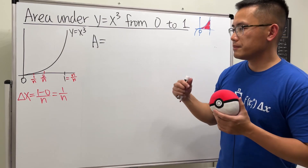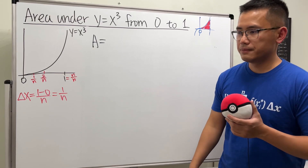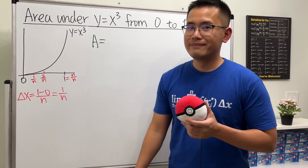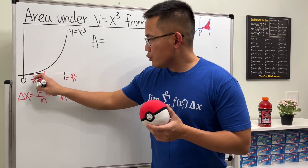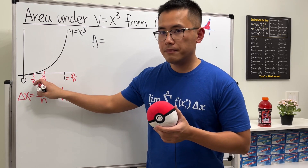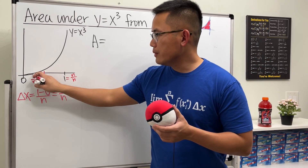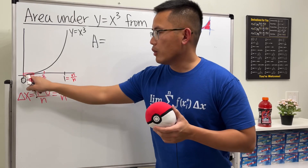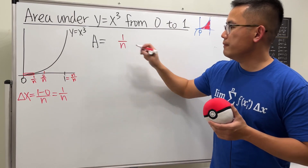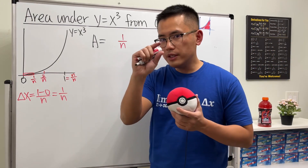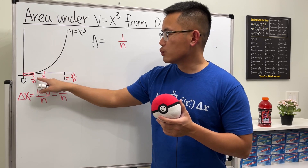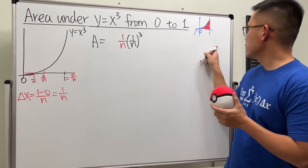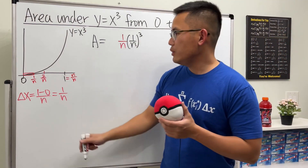We need an expression for the sum of the areas of these n rectangles. I prefer to use right-endpoint rectangles. For the right endpoint, you take the number on the right — for the first interval that's 1/n — go up to hit the curve, then draw a rectangle. This rectangle has width 1/n, and its height is the y-value: (1/n)³. That's the area of the first rectangle.